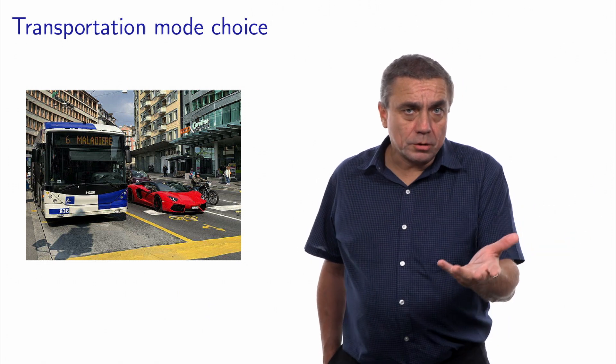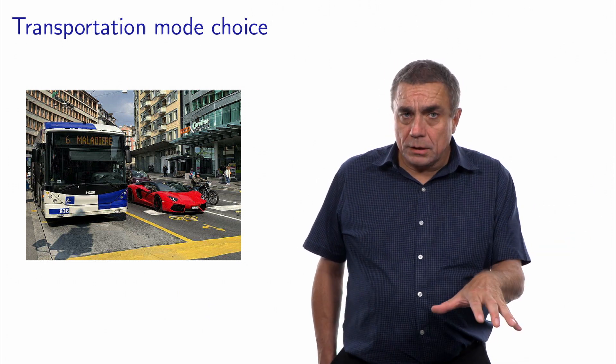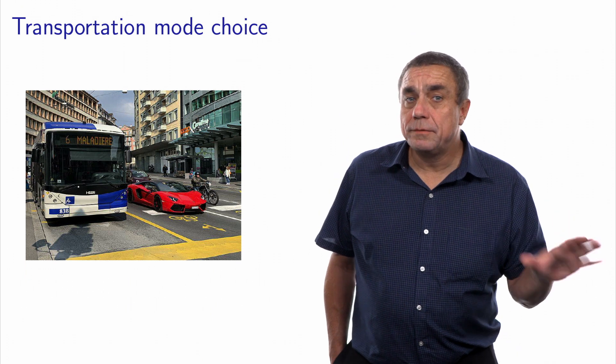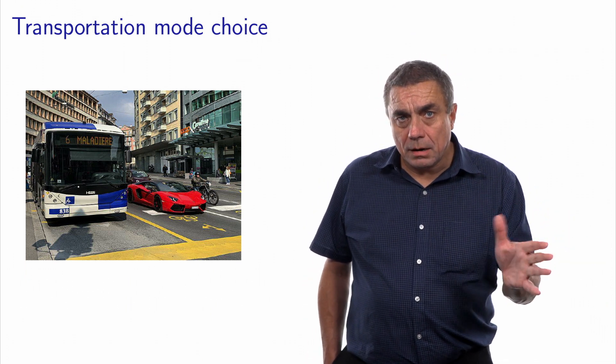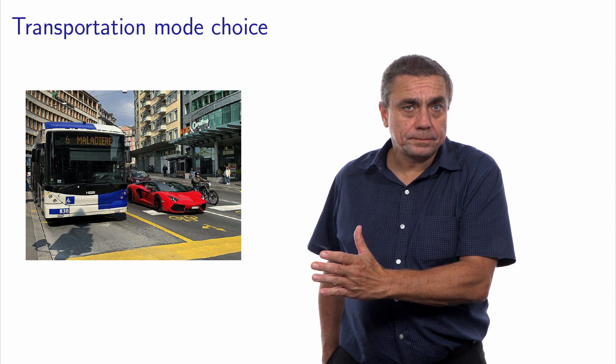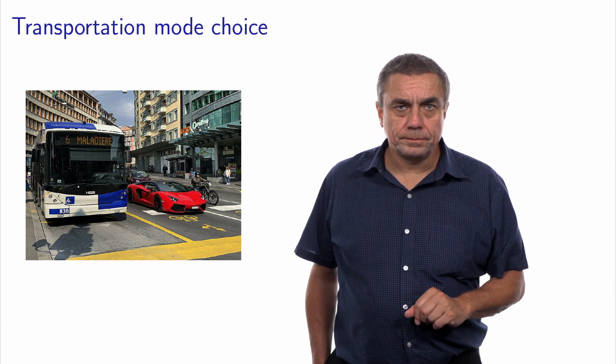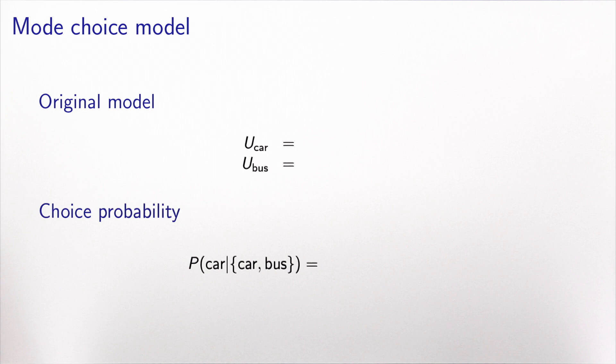So we will write a logit model, and for the sake of the example, we will consider an individual who is facing the same travel time by car and by bus. So let's write this model. The first model that we wrote for this company had two alternatives, car and bus. And here we consider a context where the individual is facing a travel time, capital T, for both alternatives.